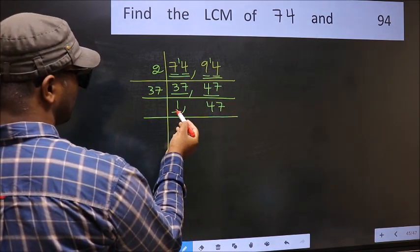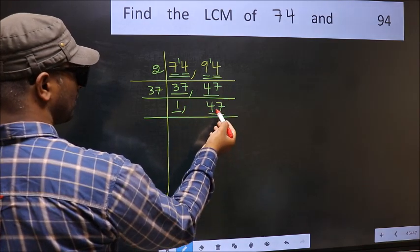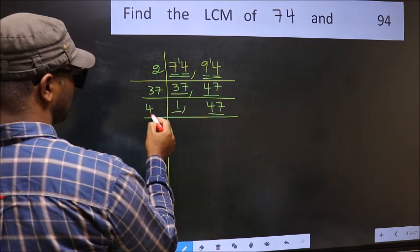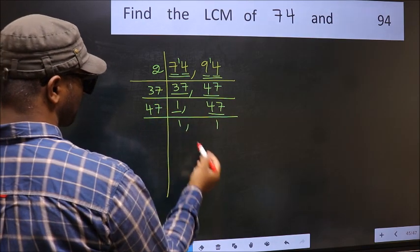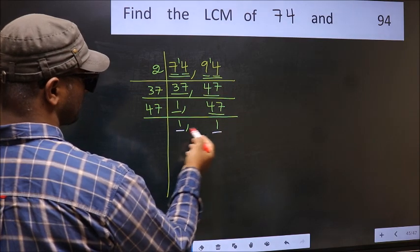Now we got 1 here. Focus on the next number, 47. 47 is a prime number, so 47 divides once to give 1. We got 1 in both places.